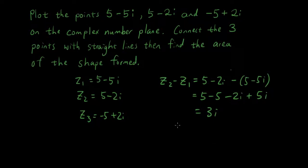And if you find the magnitude of that line, magnitude of z2-z1, that's just 3 squared, square root, so that's just 3. Okay, because there is no real component, so the magnitude is just 3.